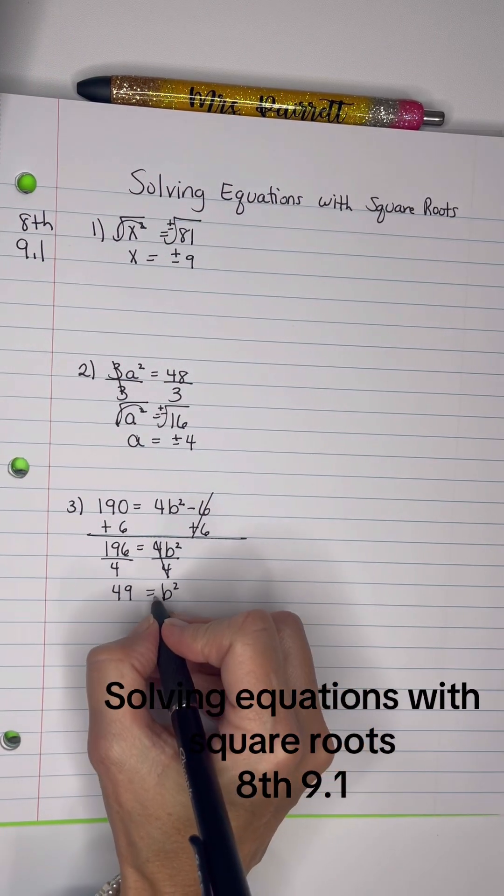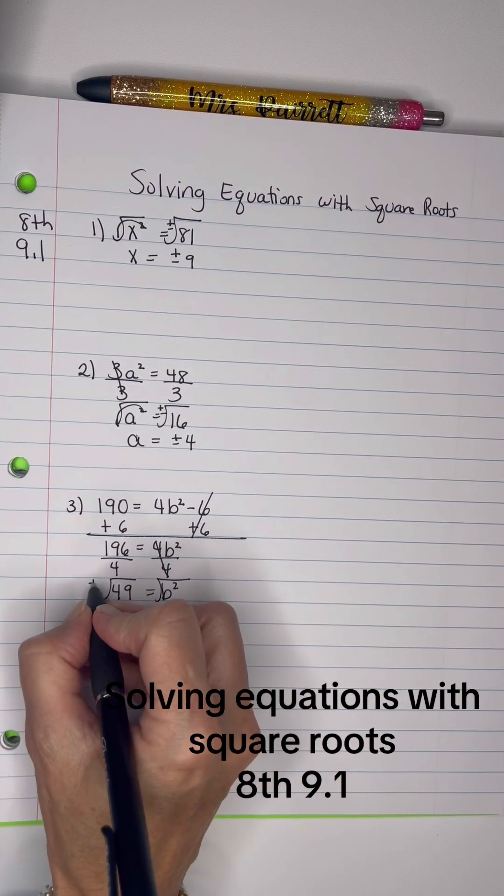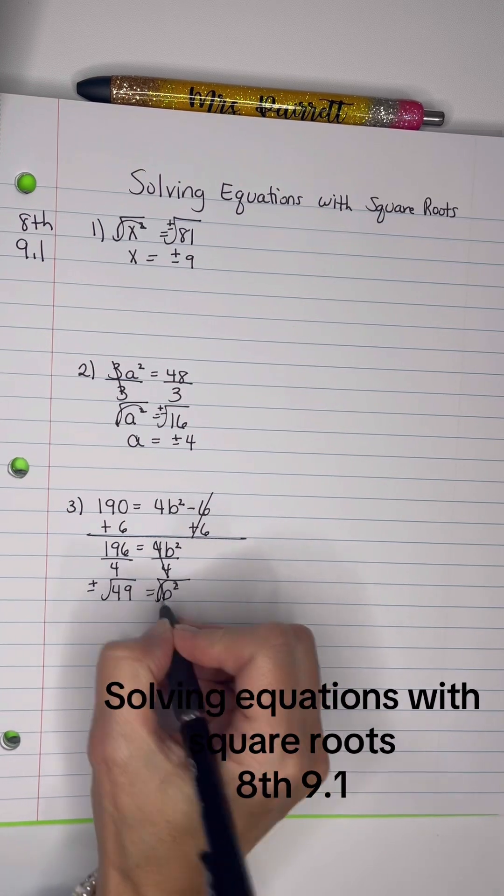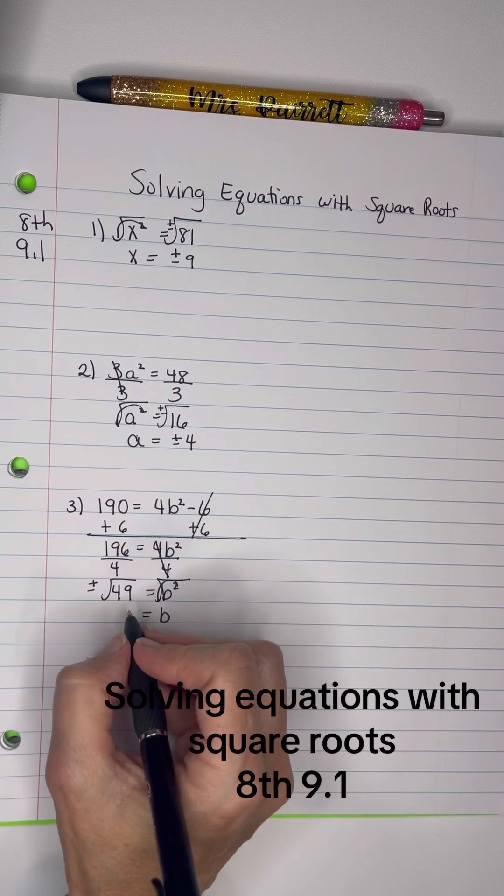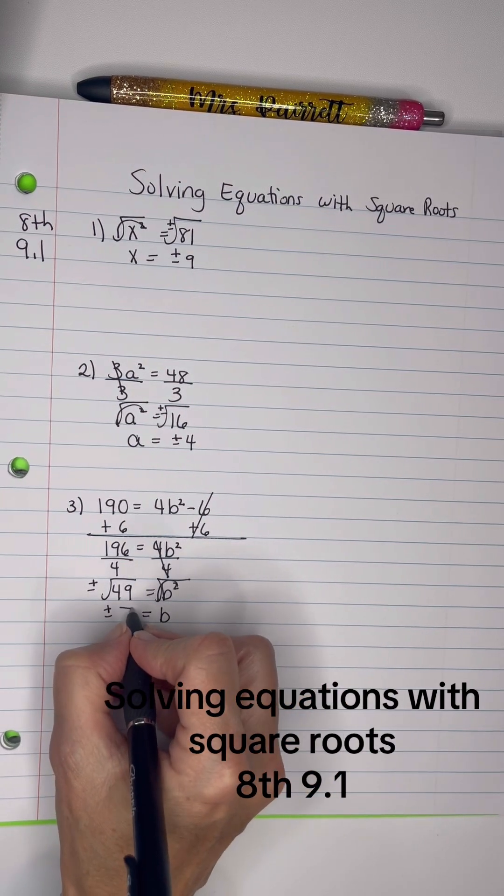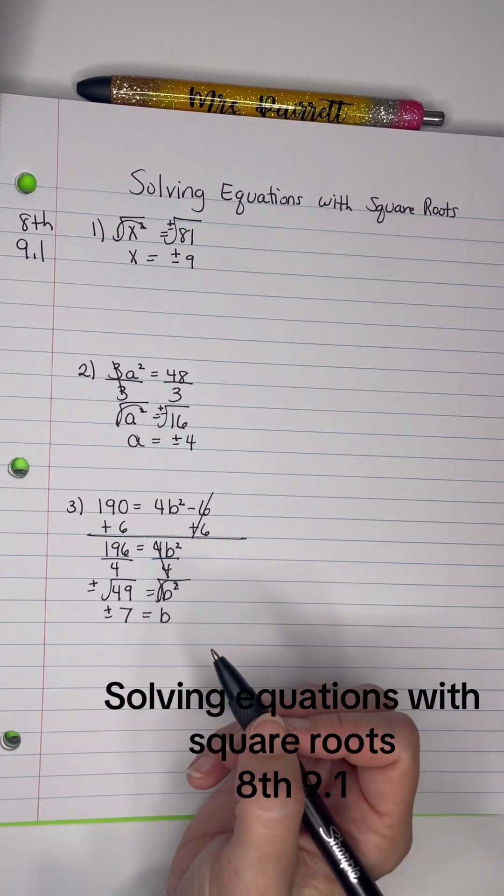Now to get rid of the square, we take the square root of both sides. Remember, we have a positive and negative answer here. So b equals the positive or negative 7, because 7 times 7 is 49, but also negative 7 times negative 7 is 49.